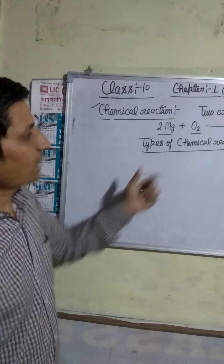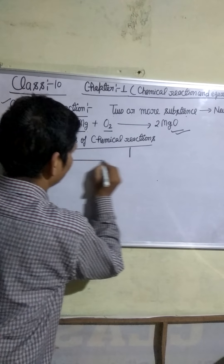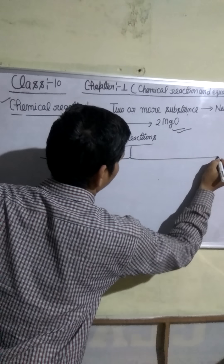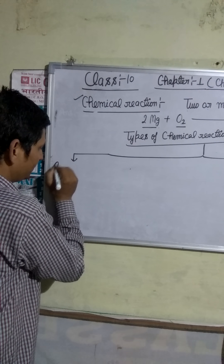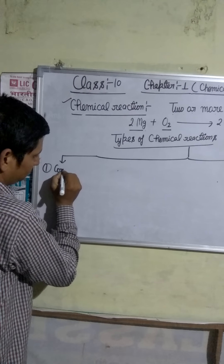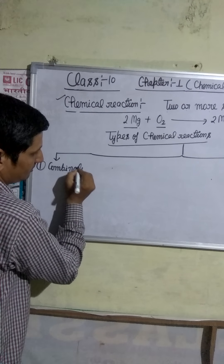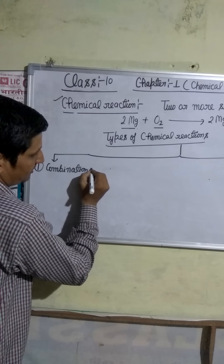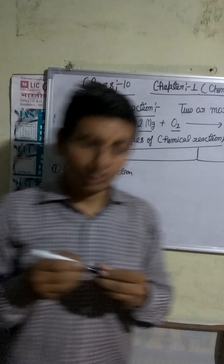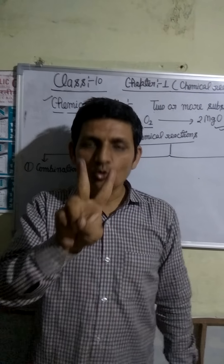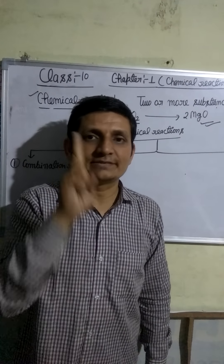Now dear students, I am going to tell you the types of chemical reaction. Chemical reactions are of a number of types. These are classified as: number one, combination reaction. Those reactions in which two or more substances combine to form a single substance.